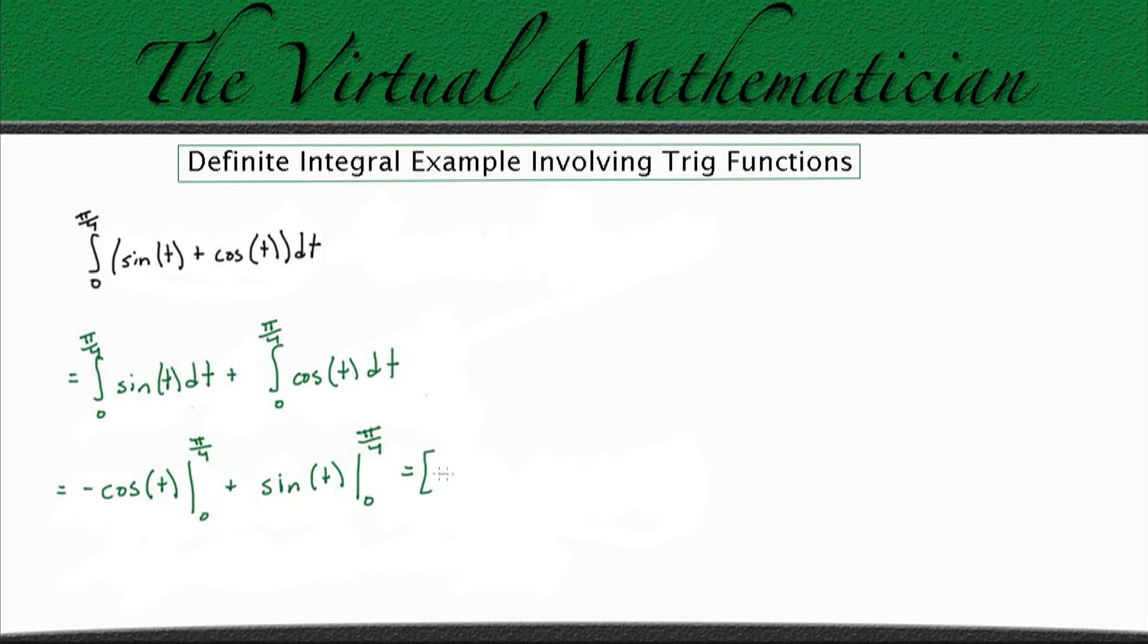we're going to get negative cosine of pi over 4, minus negative cosine of 0. And for our second integral, we're going to get plus sine of pi over 4, minus sine of 0.